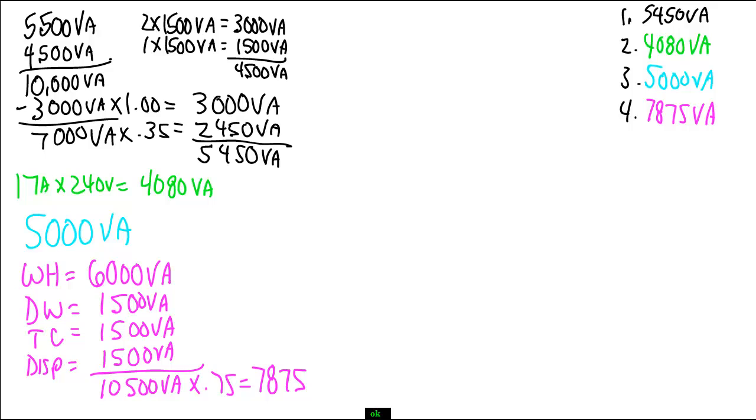So let's write that down on this side. 7,875 VA. We have four steps of our five steps to complete this calculation done. So what's left?